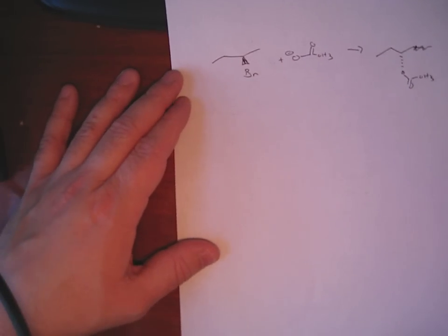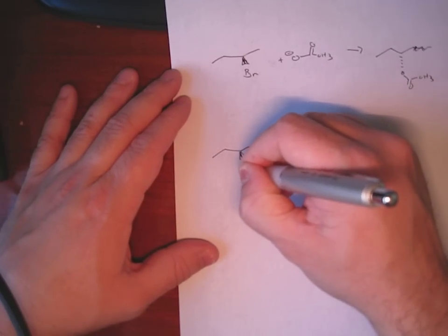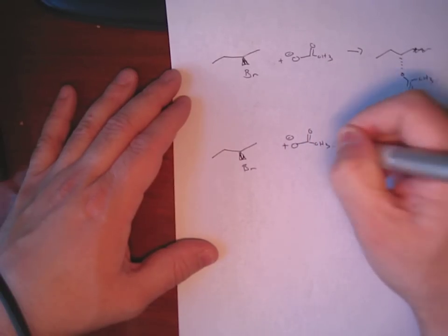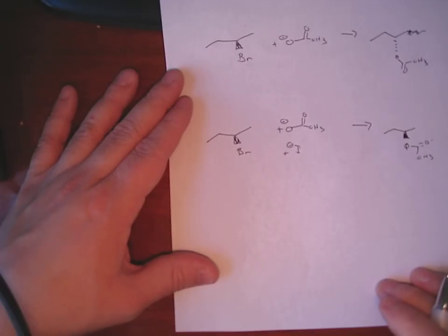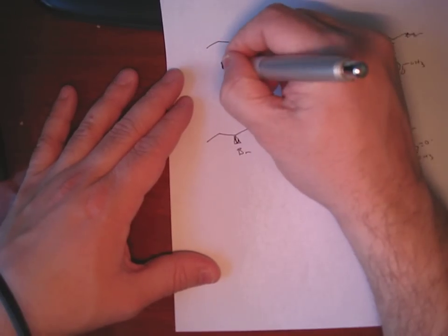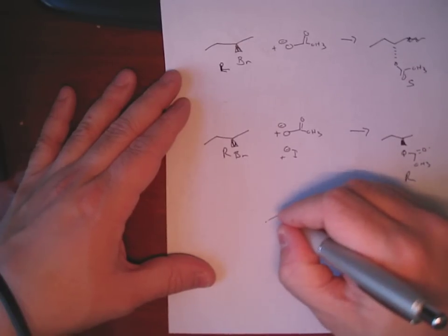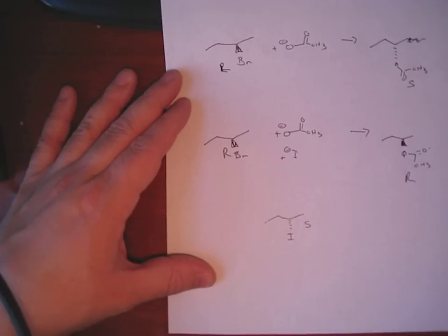But when you also then add in iodide, the product R2-bromobutane is again the R. So here's R-R-S-R. And the important thing to recognize here is that in this reaction, you go through the S-iodo-intermediate.